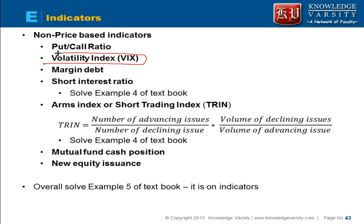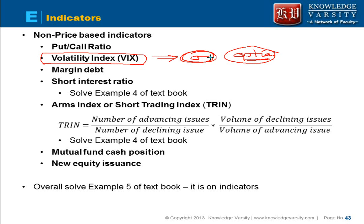Another indicator is the volatility index. The volatility index computes the standard deviation or volatility of the market using current option prices. When the market is panicking or at extreme levels, or when people are expecting the market to decrease, the volatility index increases in value. When the market is not expected to change, the volatility becomes smoother and remains at a lower, more constant value.